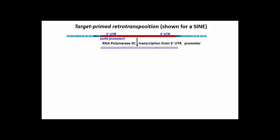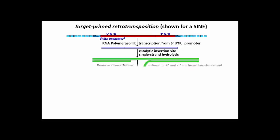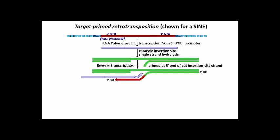Target-primed retrotransposition begins with transcription by RNA polymerase III. After hydrolysis of one strand of target DNA at the insertion site and the annealing of the retrotransposon transcript, reverse transcription is primed from the free 3' hydroxy end of that cut target strand.